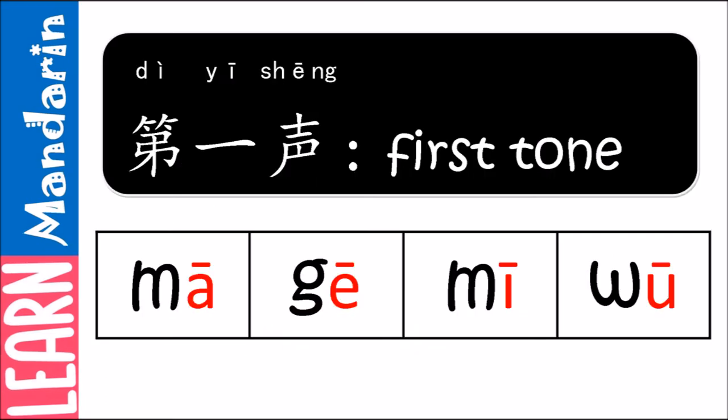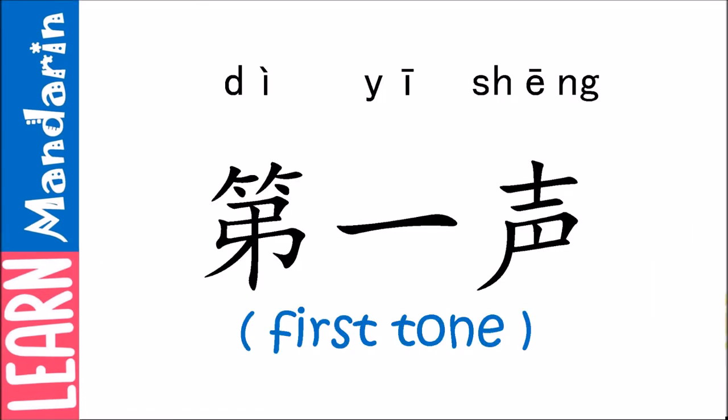第一声 — the first tone looks like a straight horizontal line above a letter. The first tone is high pitch and even for the entire syllable. Let's try to practice how to read the first tone syllables. 第一声.